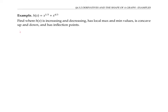Let's start with thinking about where the function is increasing and decreasing. We can get information about that by looking at the first derivative h prime, because the function will be increasing where h prime of x is positive, and decreasing where h prime of x is negative. When we calculate h prime of x, we get one third times x to the minus two thirds, plus four thirds times x to the one third, by using the power rule.